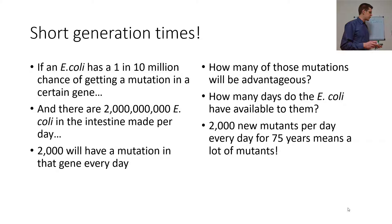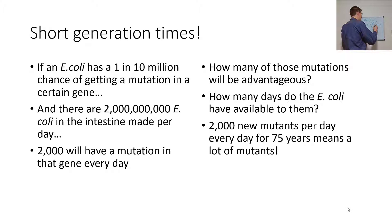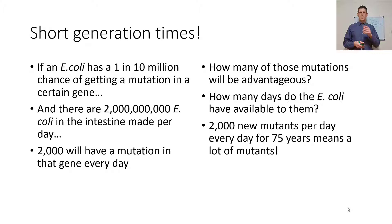One reason bacteria evolve so fast is their short generation times. For a human, you have 20 years per generation; for bacteria, it can be 20 minutes. If E. coli in your gut has a 1 in 10 million chance of getting a mutation in a certain gene, and there are 2 trillion E. coli made per day in the intestine, then 2,000 will have a mutation in that gene every day.